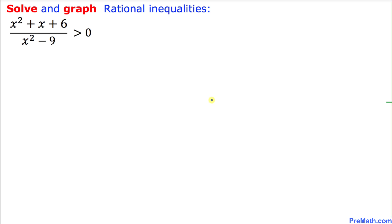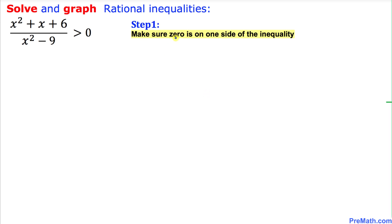Welcome to pre-math. In this video tutorial we are going to solve and graph this given rational inequality. The very first step we are going to do is make sure 0 is on one side of the inequality, and we do indeed have a 0 on one side of this inequality.